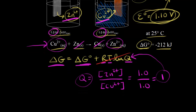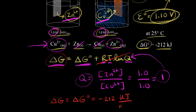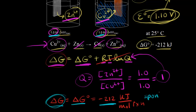Under standard conditions, delta G equals delta G zero, which is negative 212 kilojoules per mole of reaction. This makes sense because we're at one molar for our concentrations. Notice that delta G is negative, so we know this is a spontaneous reaction under standard conditions. Current flows and we get a voltage.